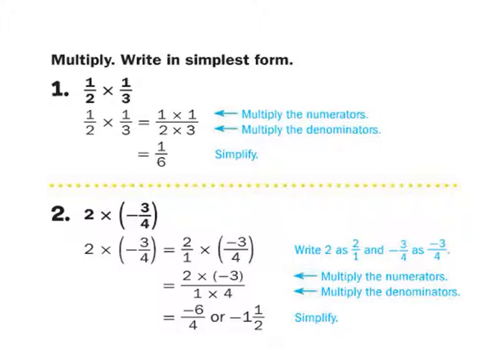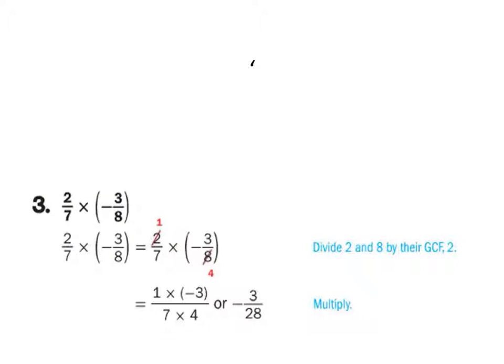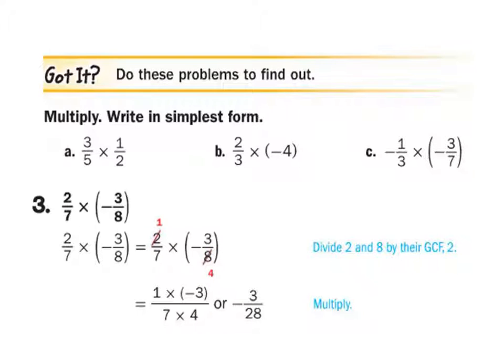Here are some examples in the book. Notice they're just multiplying straight across. Also on this one, they've changed this to two over one. Also, they've given you the answer both as an improper fraction. Here's the third example where they've cross-simplified. Right here and here. Now do A, B, and C.